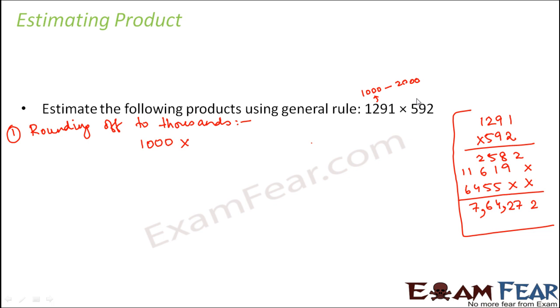Similarly, 592 lies somewhere between 0 and 1000, because when you are approximating it to thousands, it's basically 0, 1000, 2000, 3000 and so on. In that case it lies closer to 1000, so this would also be approximated to 1000. Therefore the result that you would get is 10 lakhs. What is the accurate output? It was 764,000, but you are getting it as 10 lakhs, which is too high, so it is very less accurate, it is not accurate at all.